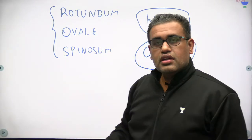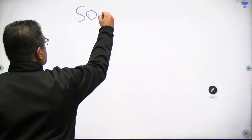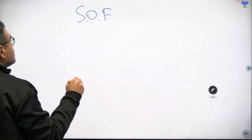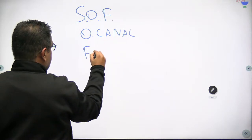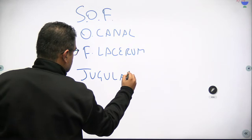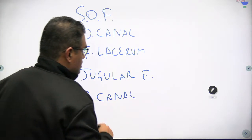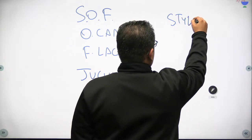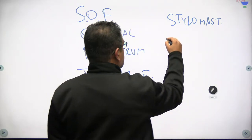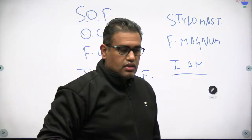Rotundum, ovale and spinosum are already noted. Moving from the anterior cranial fossa to the middle to the posterior, other foraminas worth noting include the superior orbital fissure, the optic canal, foramen lacerum, the jugular foramen, the carotid canal, the stylomastoid foramen, the foramen magnum, and the internal auditory meatus. There are 12 pairs of cranial nerves, and each one exits through specific foraminas, so we should know which foramen corresponds to each nerve.